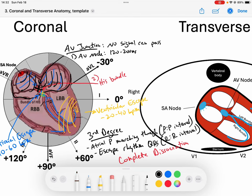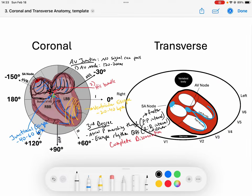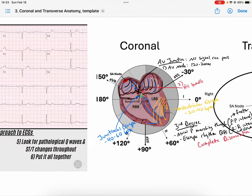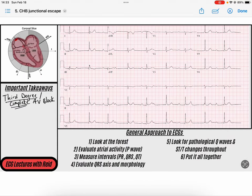Complete dissociation here. The only thing that we do know is that the P to P interval will be faster compared to the R to R interval, which will be slower. And so let's take a look at some examples where there is no communication between the atria and the ventricles.